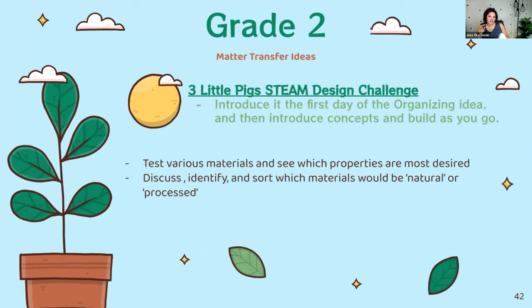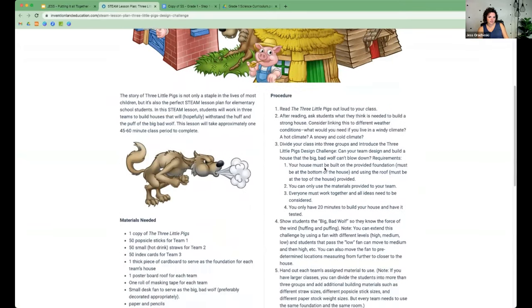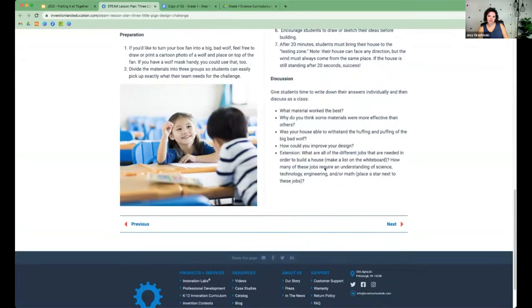For grade two, my idea is a Three Little Pigs STEAM design challenge. I would introduce this idea on the very first day, then constantly go back to those concepts at the surface and deep levels. Students would test various materials to see which properties are most desired, then discuss and identify which materials would be natural versus processed. If you click on the link, it goes to a website where I got the idea — it fits really well into the matter organizing idea.